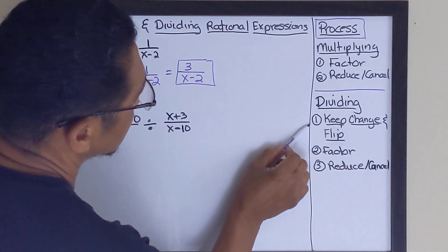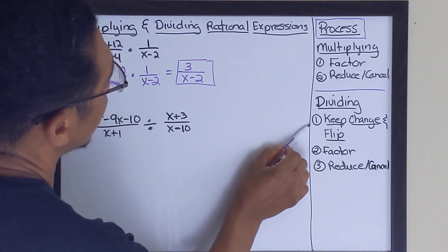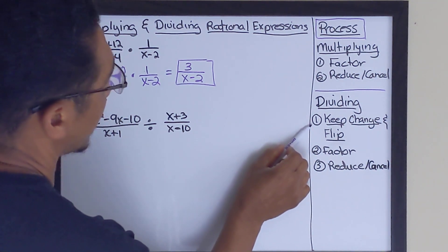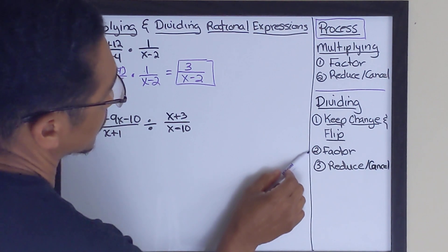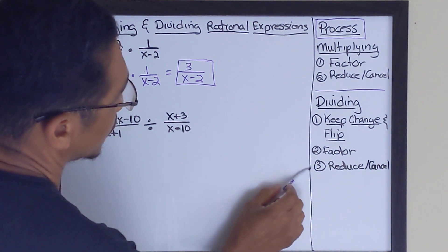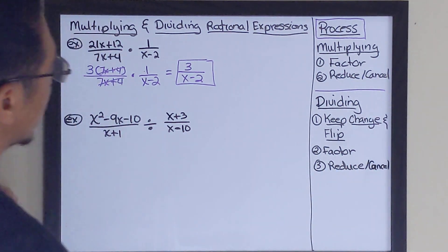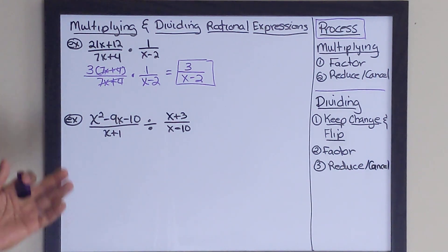And once you've done the keep change and flip, the problem actually becomes a multiplication problem. And at which point we factor whatever is factorable. And then we reduce and cancel and then we multiply straight across as we did in multiplication.